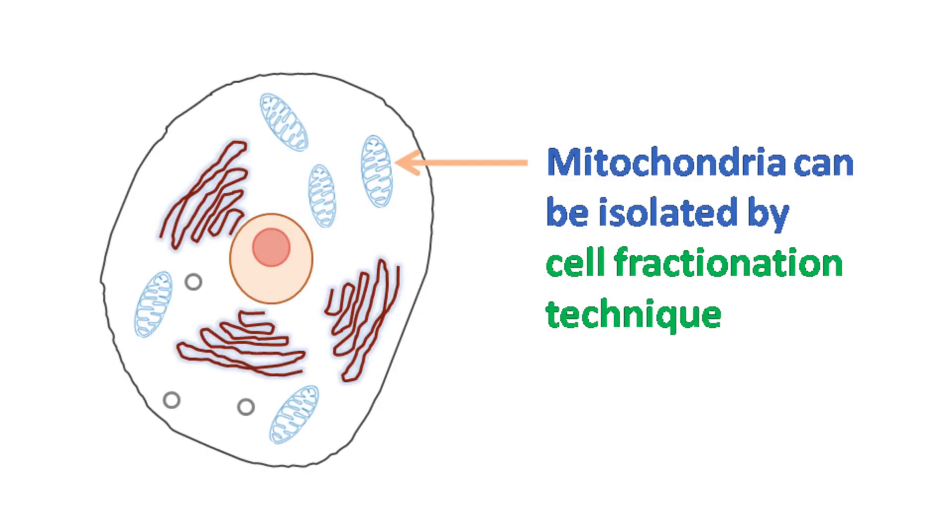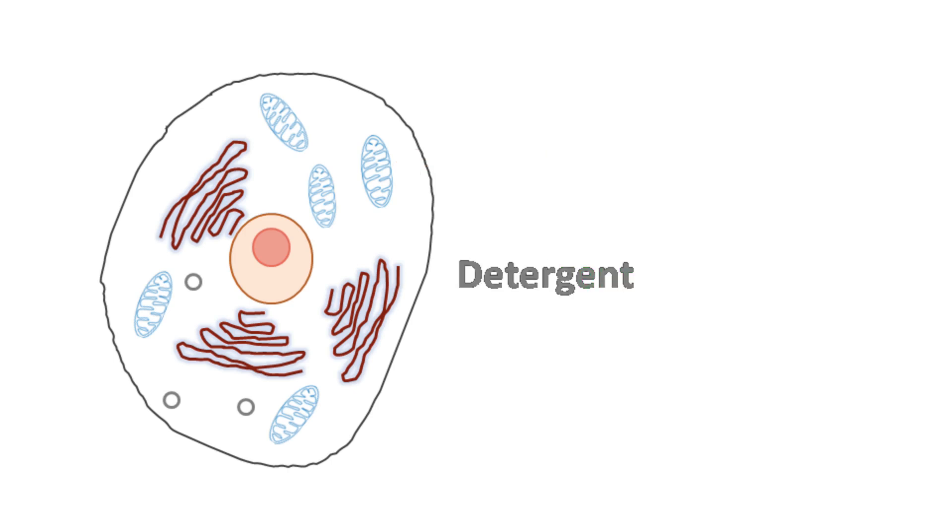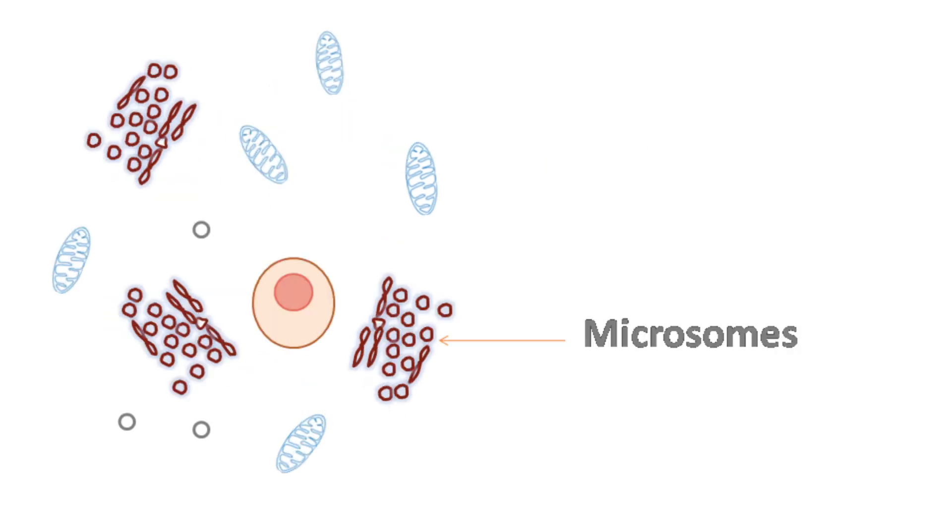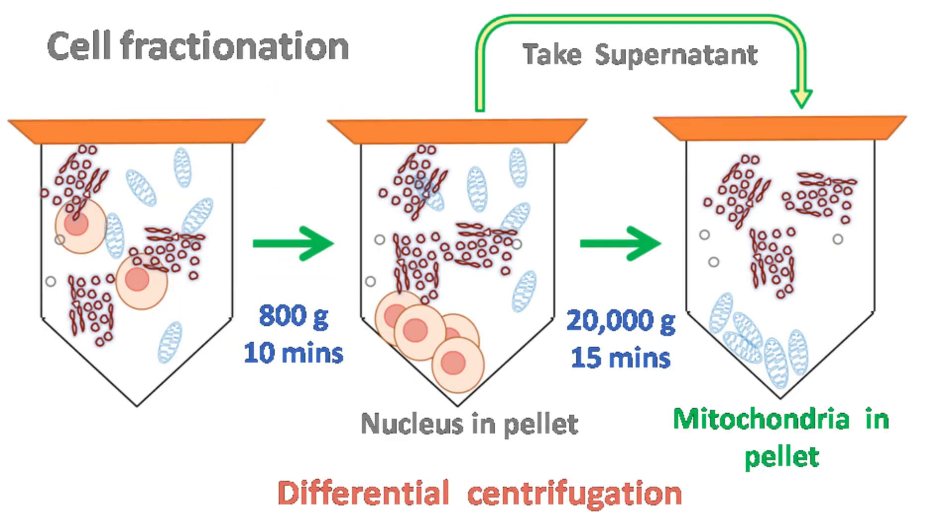Eukaryotic cells have many mitochondria that can be isolated by cell fractionation technique. In this process, the cells are lysed with mild detergent and centrifuged. Mitochondria are obtained by centrifugation at 20,000g for about 15 minutes.